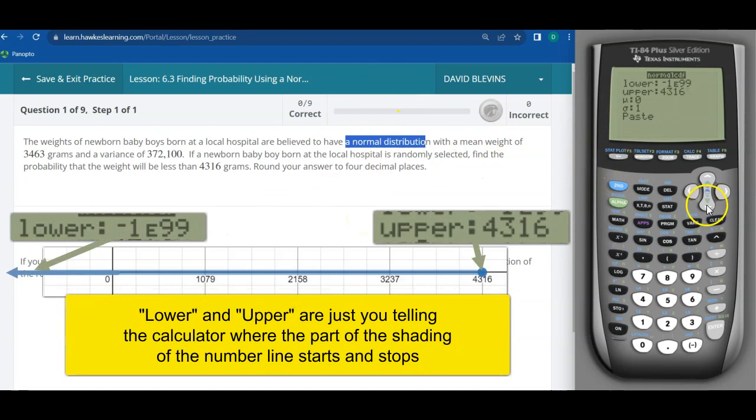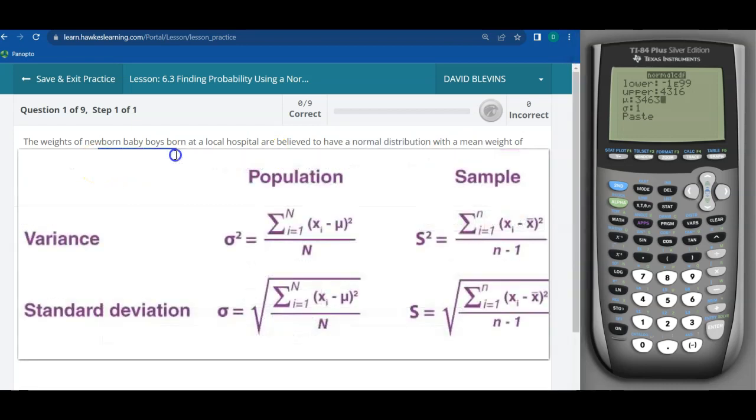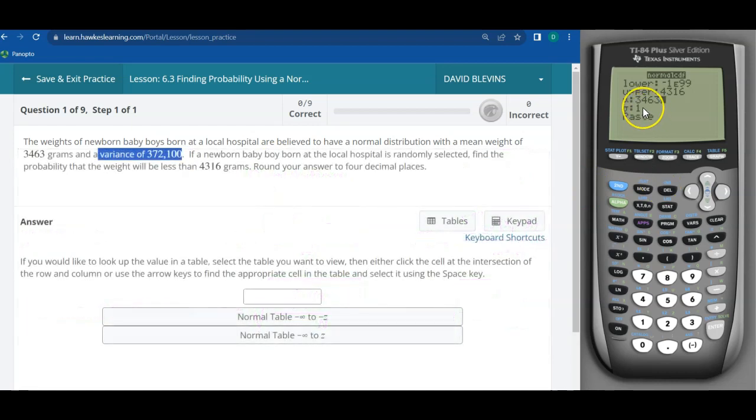And then it wants to know what's your mean, what's your standard deviation. So the mean is 3463 and then notice what they're giving me here, this is variance. Recall variance is the square of standard deviation and what this is asking me for right here is the standard deviation.